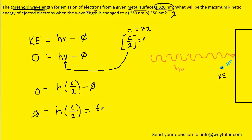What we'll do is plug in the value of Planck's constant, which is roughly 6.63 times 10 to the minus 34 joules times a second. Then we'll multiply that by the speed of light, which is roughly 3 times 10 to the eighth meters per second, divided by that threshold wavelength, which was given to us as 320 nanometers. Make sure you convert this into the standard unit of meters by multiplying by 10 to the minus 9.